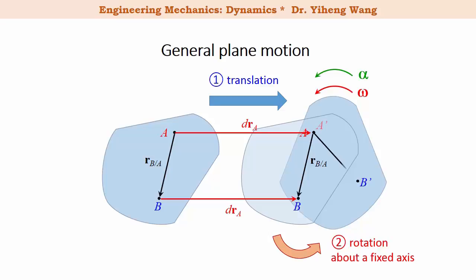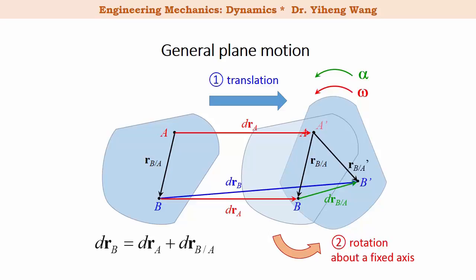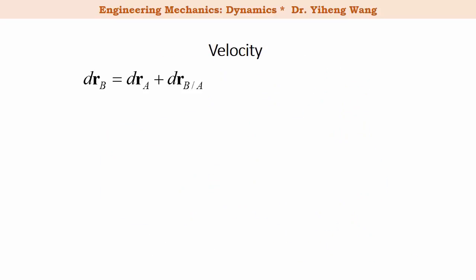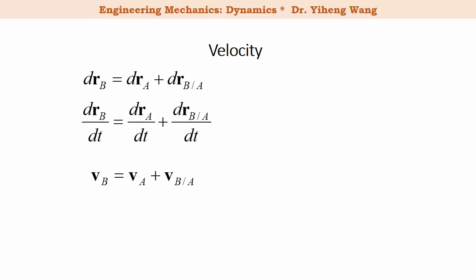Now particle B has a new relative position with respect to A, and the change in its relative position is represented by vector drB/A. From vector addition, the displacement of particle B drB equals drA plus drB/A. Taking the time derivative of this equation, we get the equation for linear velocities of any two arbitrary particles in the same rigid body undergoing general plane motion: the absolute velocity of particle B equals the absolute velocity of particle A plus the relative velocity of B with respect to A.